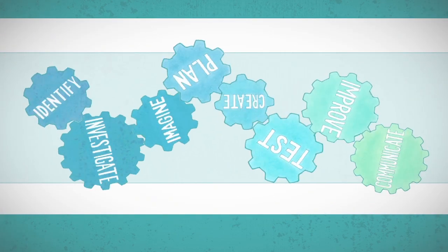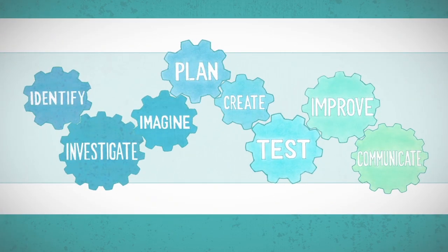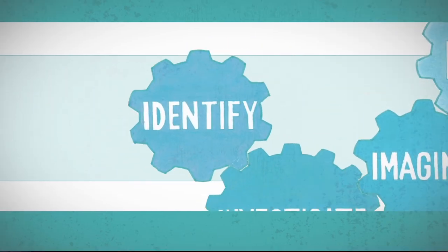The engineering design process is a series of steps engineers use to solve problems. In the case of plastics, engineers identified the problem. Plastics weren't biodegrading and they were piling up.